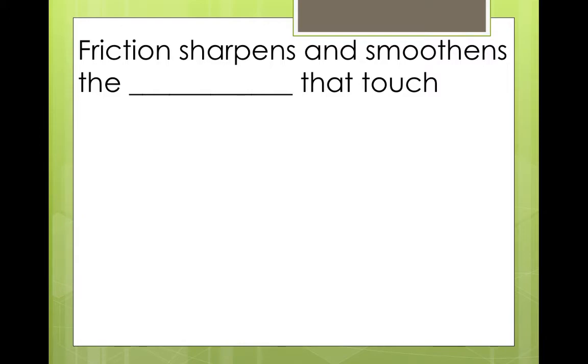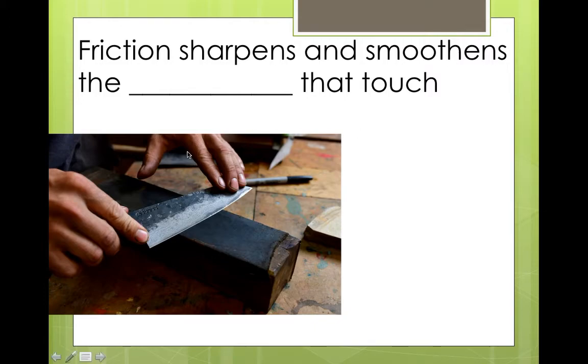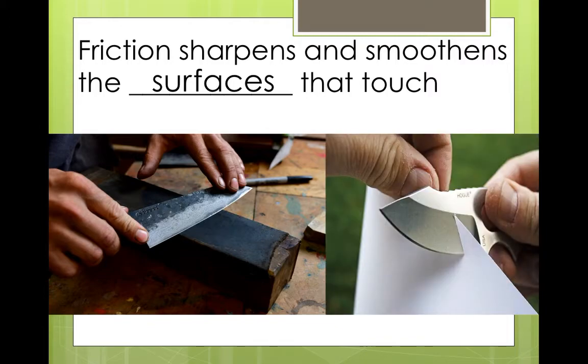Friction also sharpens and smoothens the surfaces that touch. We look. Here we have a knife. The knife is very dull. So, we rub it on the surface. Friction sharpens and smoothens the surfaces that touch. When we sharpen the knife. It is very sharp.